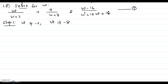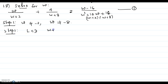So, w plus 2 and w plus 8 form the LCD. If you factor the right-hand side denominator you get w plus 2 times w plus 8. Looking at all the denominators on the left-hand side and right-hand side, the least common denominator is w plus 2 times w plus 8.